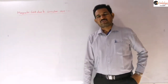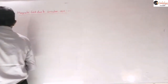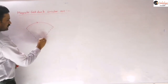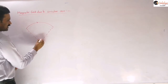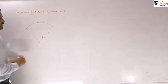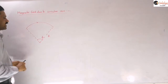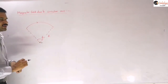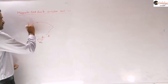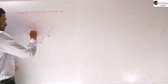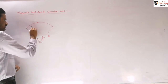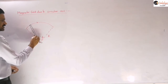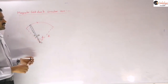The next thing is the magnetic field due to the circular arc — another important formula you need to remember. Consider a circular current-carrying conductor having radius r subtending a total angle phi at the center. To find the magnetic field at the center of this circular arc, we take a small element at angle theta with angular width d-theta.